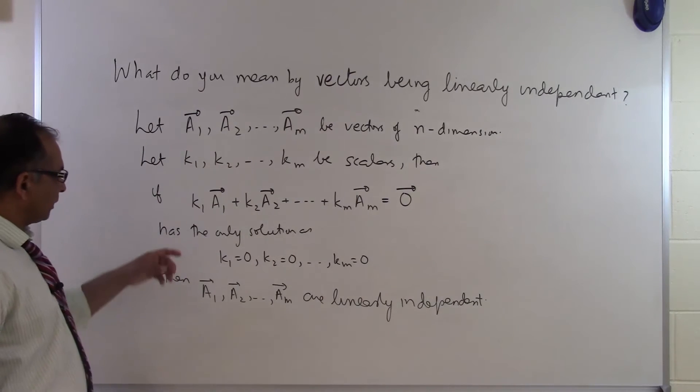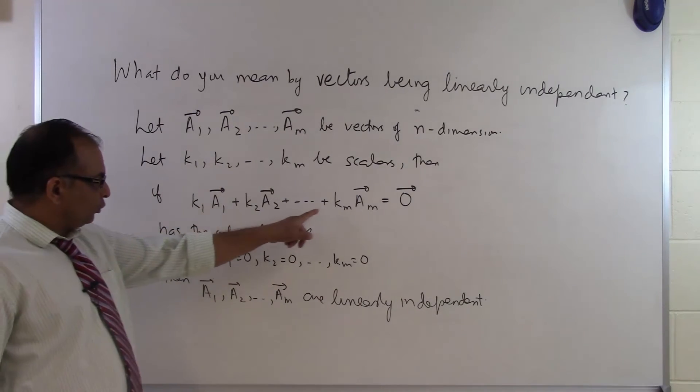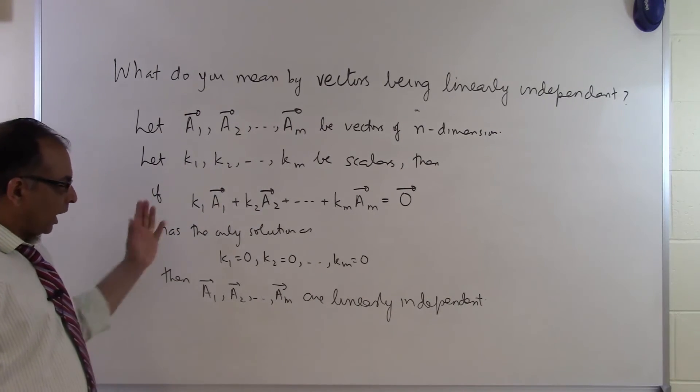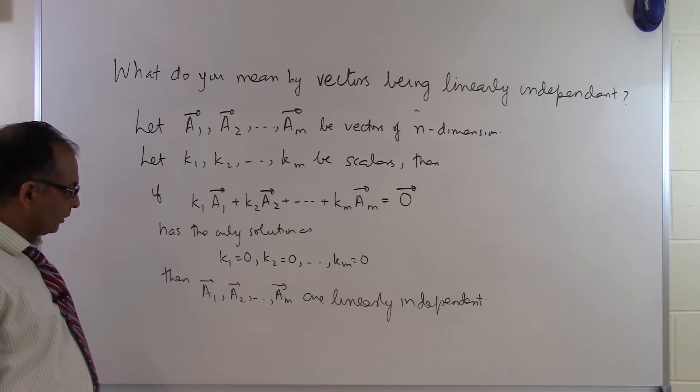It seems obvious that if I put k1, k2, all the way up to km equal to zero, I will get zero vector equal to zero vector. So that is the trivial solution.